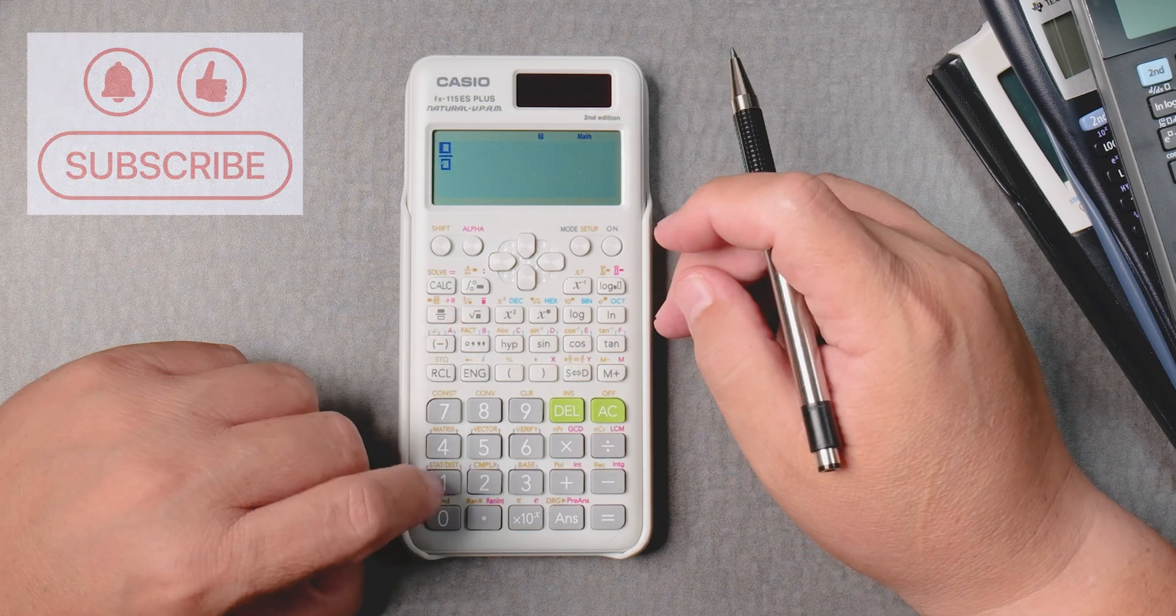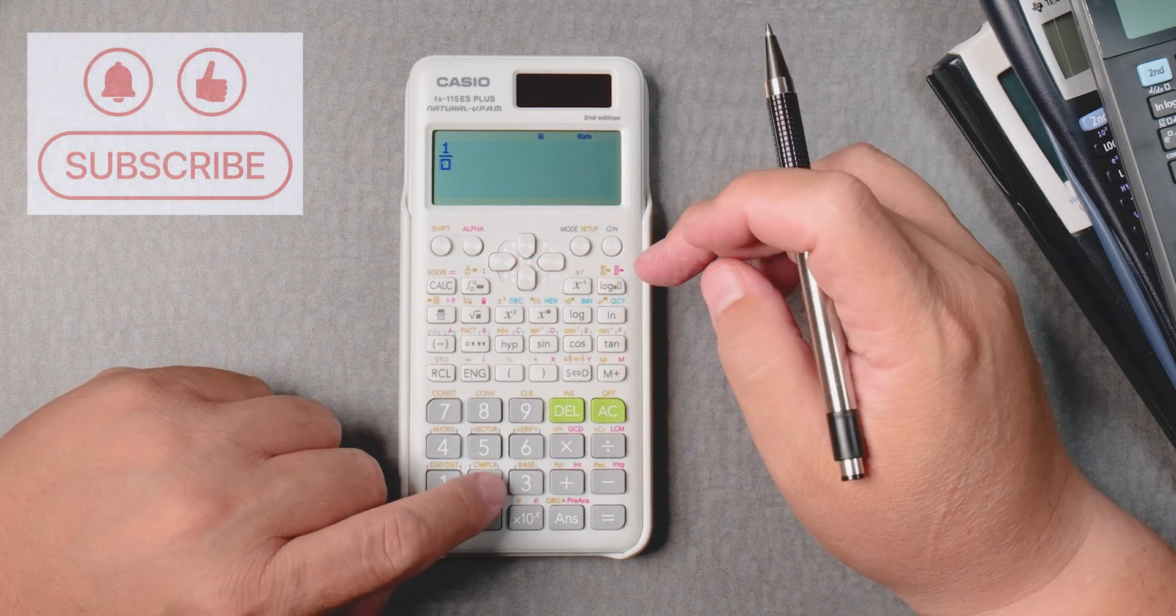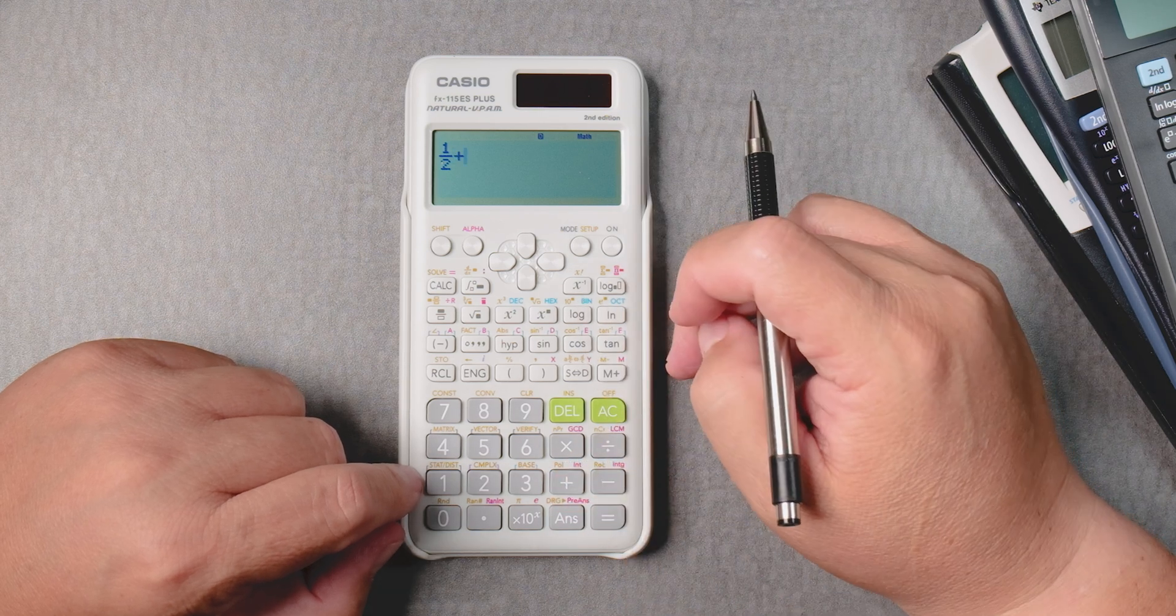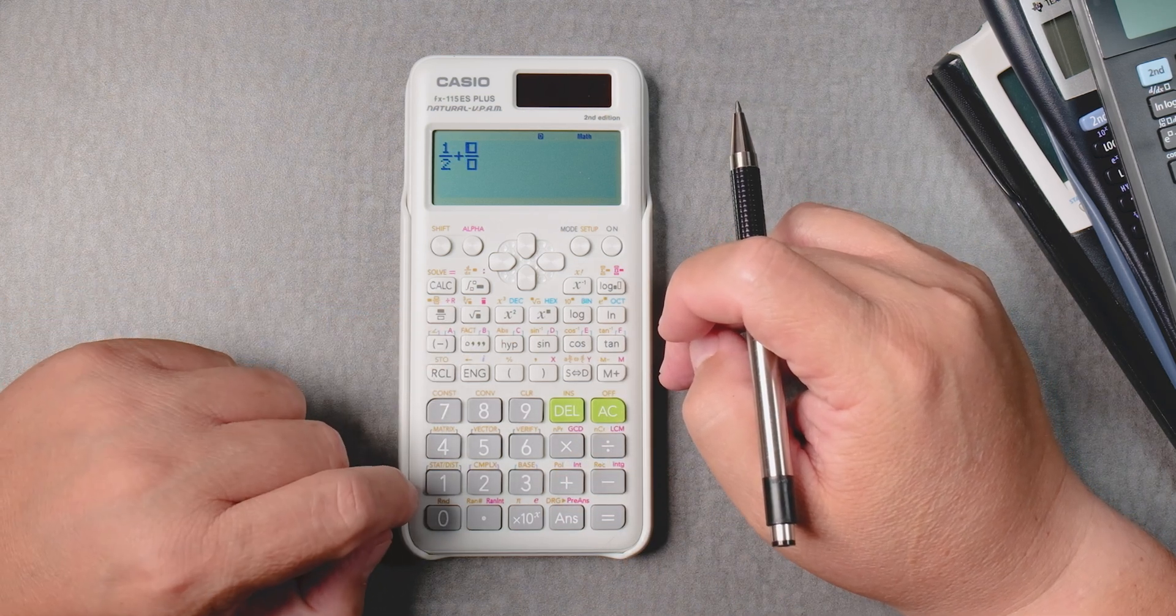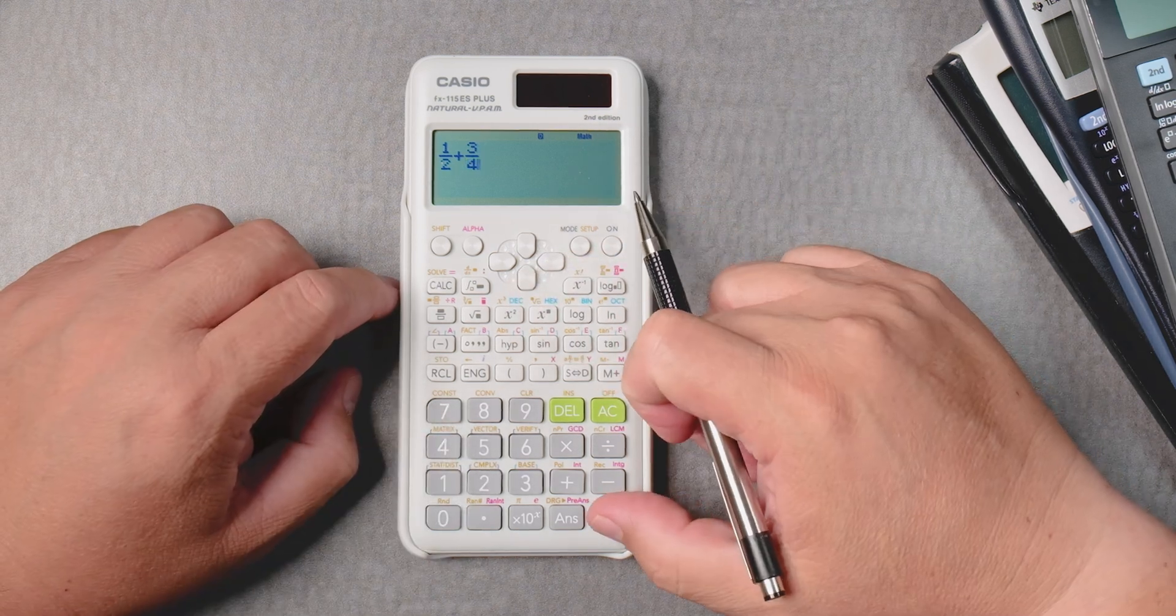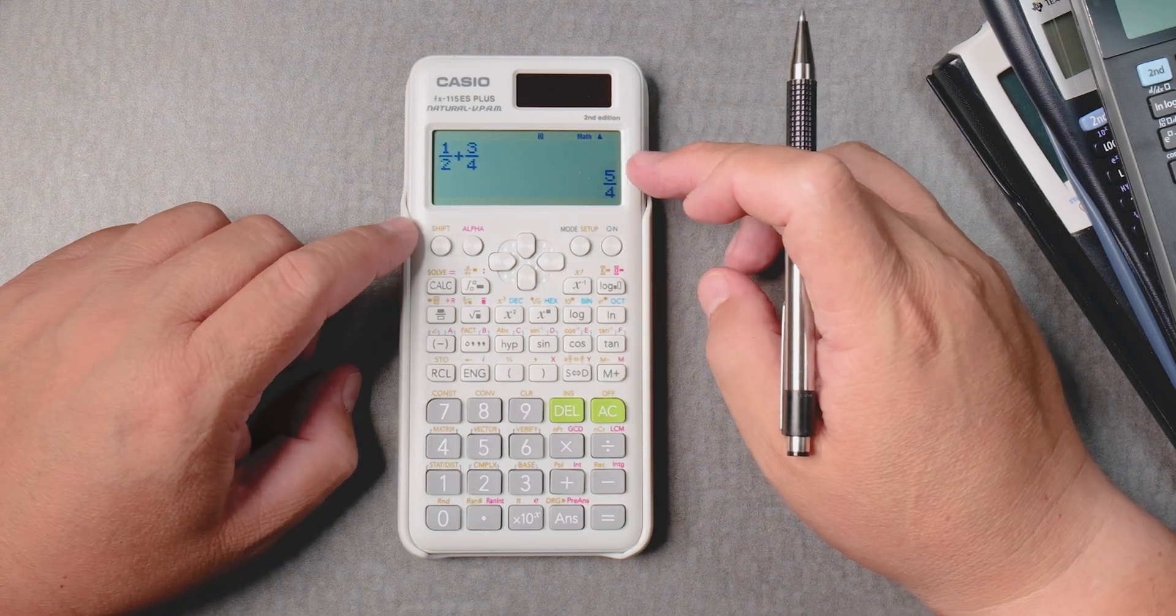So here's a fraction button. One, then bring it down. Two, bring it over. Plus, and then fraction button. Three, bring it down. Four. And then equals. It gives you 5 over 4.